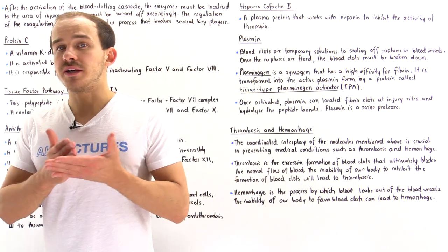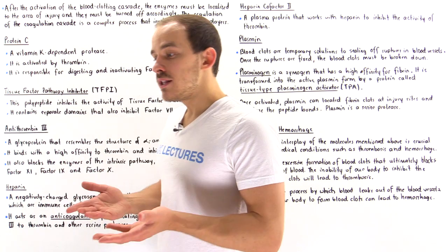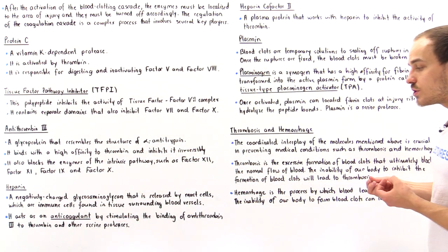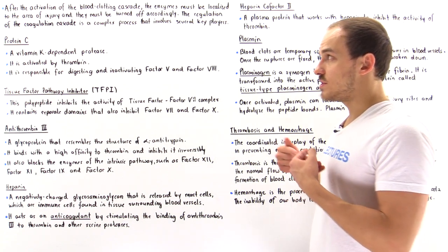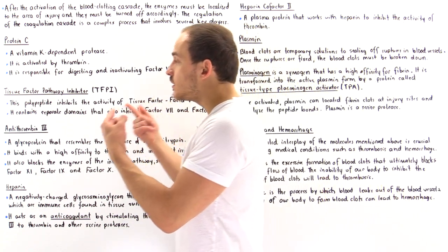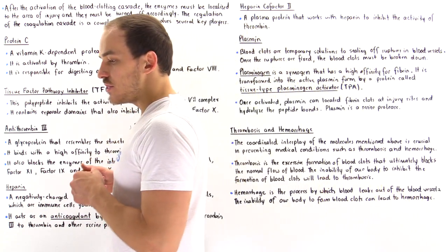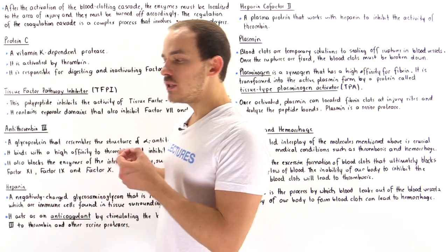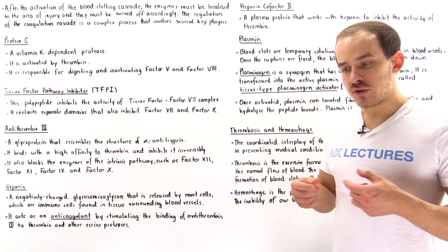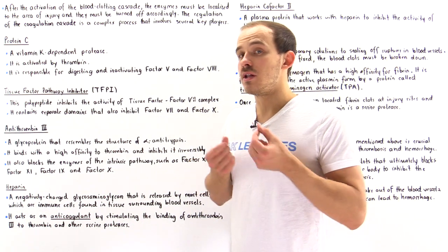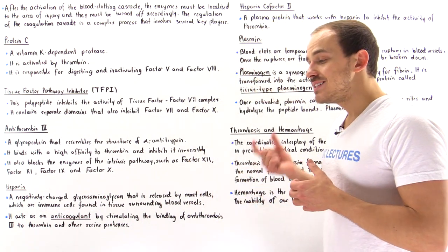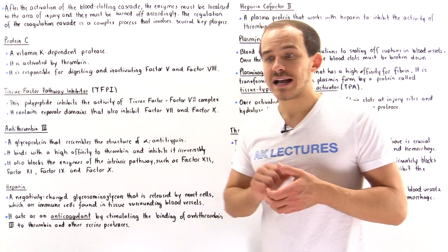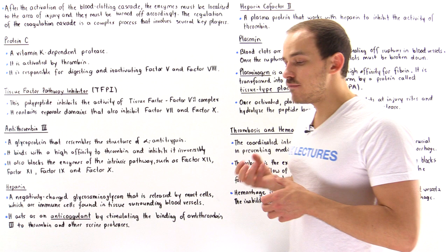Hemorrhage can be very dangerous. It can cause damage to the tissues and organs of our body. And so to prevent hemorrhage from taking place and causing damage, we have the blood clotting cascade that is immediately initiated. When the blood clotting cascade is initiated, we produce blood clots that are used to create temporary seals along the area where the cut actually exists on that blood vessel.